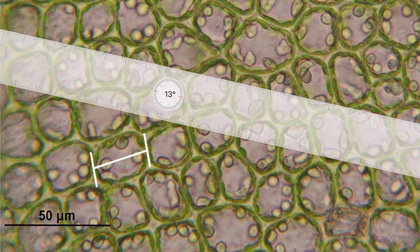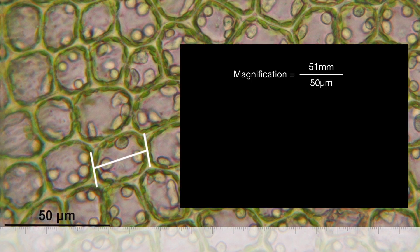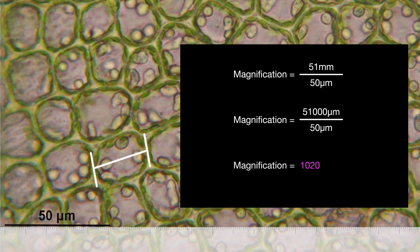Using a digital ruler with centimeters and millimeters placed against the scale bar — you may want to pause the video to check — the scale bar measures 51 millimeters. So the image size is 51 millimeters and the specimen size is 50 micrometers. Since these are different units, we convert 51 millimeters to micrometers by multiplying by 1000, giving 51,000 micrometers. Dividing 51,000 by 50 gives a magnification of 1020.